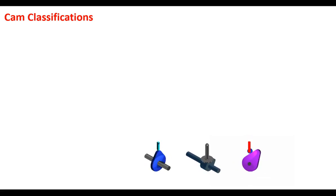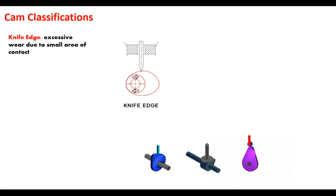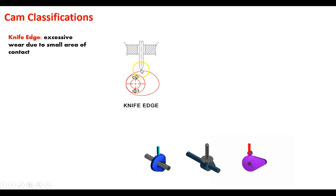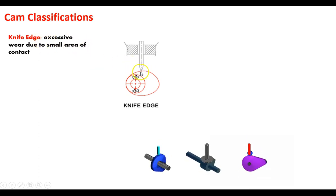Since we understand the basics of how cams work, let's look at how they're classified. There are four basic classifications of cam, each with certain value and drawbacks. The first and simplest is the knife-edge follower — the follower itself comes to a very sharp point and rides along the cam, causing it to rise and fall. One downside is a lot of wear due to the small area of contact, and it tends to have a slightly more abrupt style of motion.